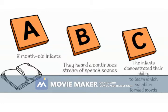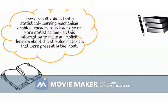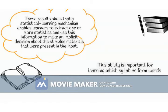This suggested the term statistical learning to refer to the process by which learners acquire information about distributions of elements in the input. In this experiment, the elements were the syllables and their distributions were the statistics of how likely these elements were to occur in relation to one another. Thus, statistical learning is a powerful and dominant general mechanism available early in development to infants who are naive and uninstructed about how to negotiate a complex learning task. These results show that a statistical learning mechanism enables learners to extract one or more statistics and use this information to make an implicit decision about the stimulus materials. This ability is important for learning which syllables form words, for estimating the number of peaks in a distribution of speech sounds, and for discovering which visual features form the parts of a scene.